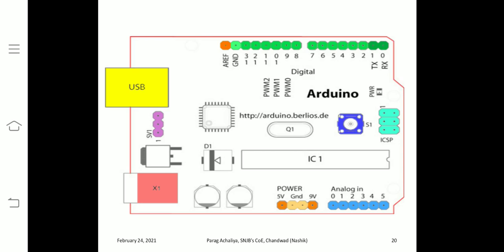The Arduino board has various power pins, analog pins, digital pins, a reference pin, ground pin, receiver and transmitter pins. Other components include the IC, USB port, Ethernet port, and power supply port. The most important part, however, is the different pins mounted on the Arduino board.